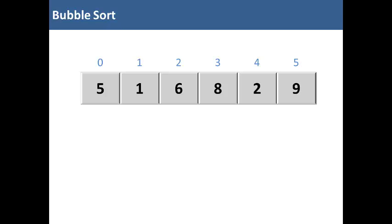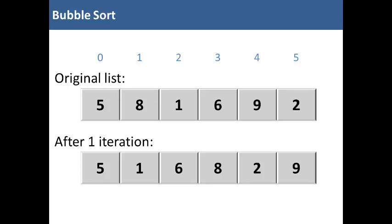So after one iteration, this is what our list looks like. Now, if you compare that to the original list, you can see that the larger items work their way to the right. The smaller items work their way to the left. But after one iteration, the two is still here and the one is still here. So the smallest items did not work their way all the way to the left.